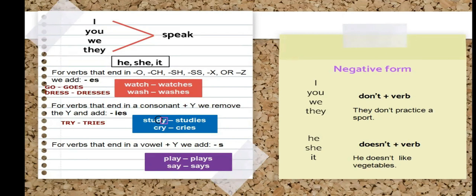Consonants are the letters B, C, F, D, G, H, J, K, L, M, N, P, Q, R, S, T, V, W, X, Y, and Z. The vowels are A, E, I, O, U — there are only five, and there are about 21 consonants. So when you have a vowel and the letter Y, you only add the letter S. For example: play becomes plays, say becomes says.